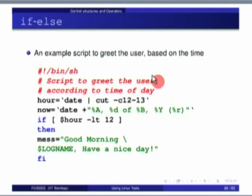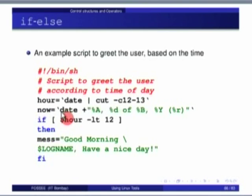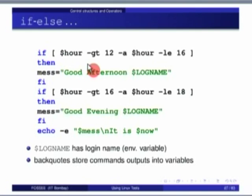Please note the use of backticks here. When you use backticks to execute a command, that is very different from using a single closed quote. The variable 'hour' is getting defined using the date command inside backticks. Please read the slides carefully and try to understand what the script is doing — for example, is it really doing a good-afternoon/good-evening decision based on the hour?